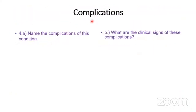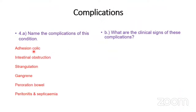What are the complications of this hernia? Adhesion colic, intestinal obstruction leading to strangulation, gangrene, and even perforation of the bowel with peritonitis and septicaemia. These are very serious complications of strangulated incisional hernias.